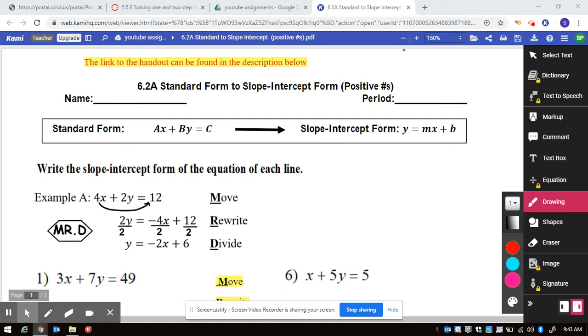These are linear equations, and you would want to take the standard form, ax plus by equals c, and solve that to slope intercept form so that you would be able to easily graph that.